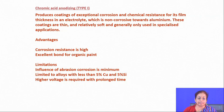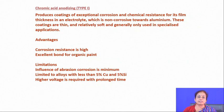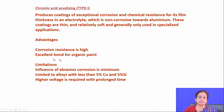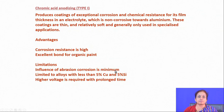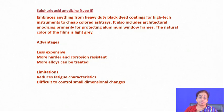Anodizing can be done in two different solutions: chromic acid or sulfuric acid. Chromic acid solution produces coatings of exceptional corrosion and chemical resistance, but abrasive resistance is minimal, so it cannot be used for wear resistance. One important limitation of anodizing is that if the material is an aluminum-based alloy or magnesium-based alloy, the kinetics of anodizing are very poor. Usually anodizing is applied only on pure metallic materials, as it is very difficult to anodize alloy systems.